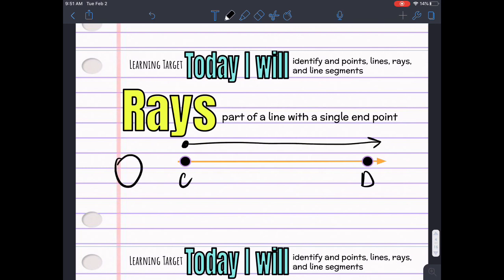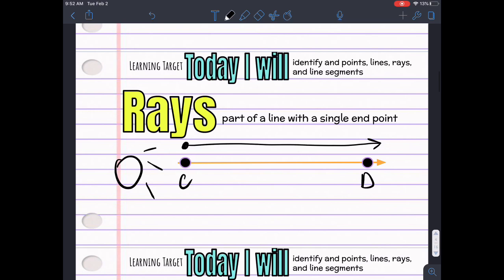Here's my end point, and it goes on in that direction. I like to think of rays like coming off of sunshine, right? They start at the sun. There's their end point, and they just all the way down to earth. So, this is Ray CD.